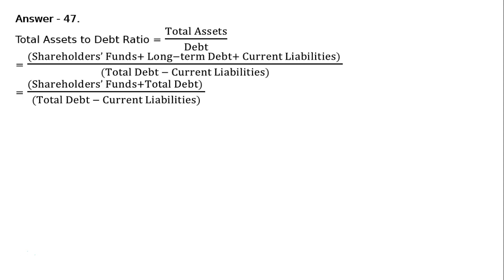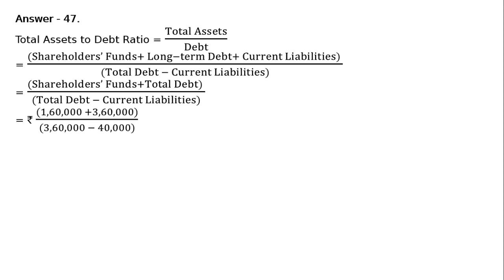In the next step, the numerator is shareholders funds plus total debt. In the second step, I have written long-term debt plus current liabilities — this is the total debt. Out of the total debt in the denominator, if we deduct current liabilities, we get the long-term debt. Now substituting the values: